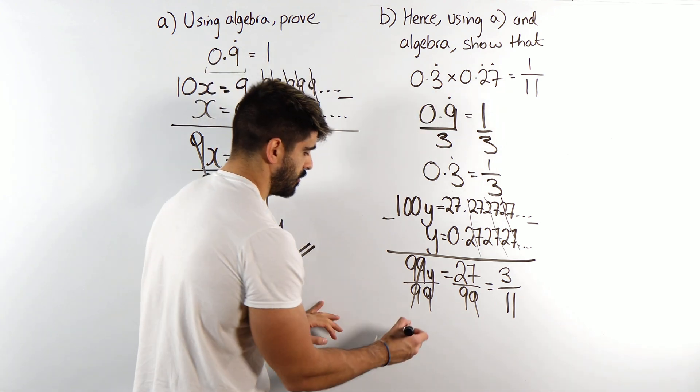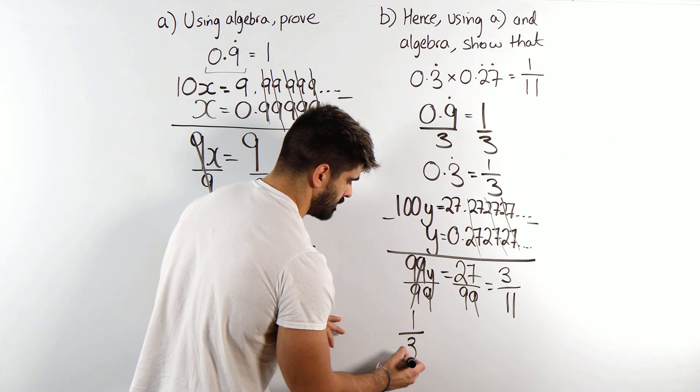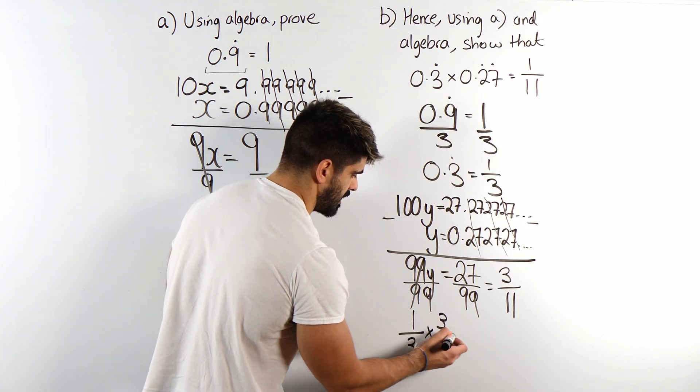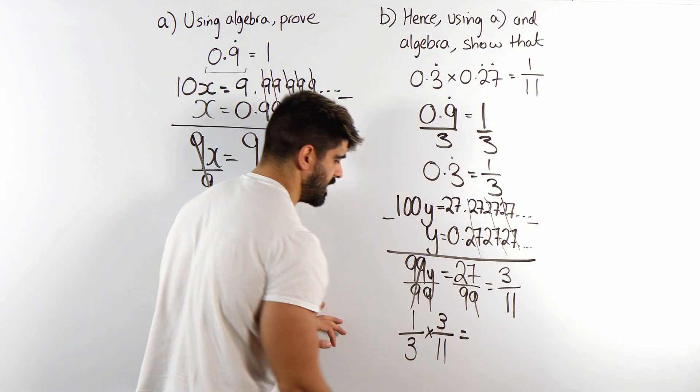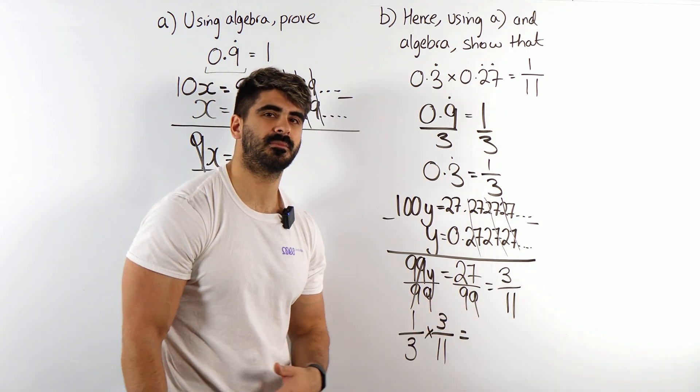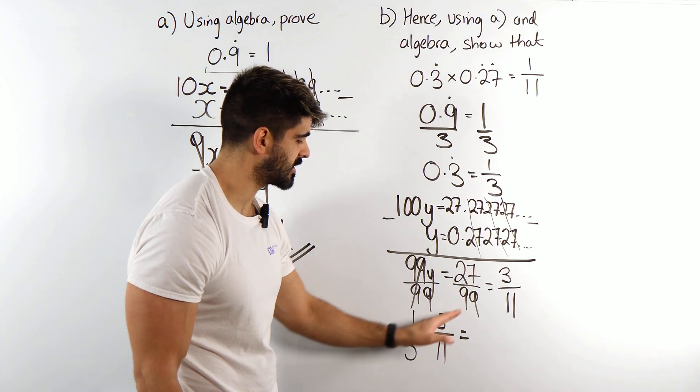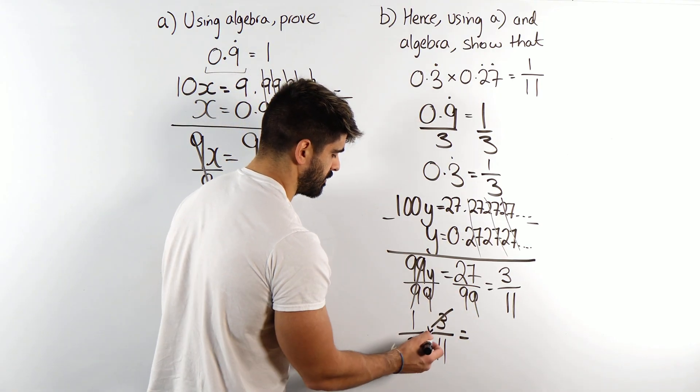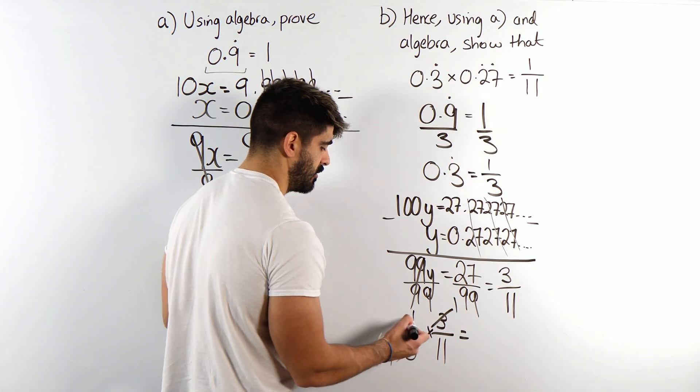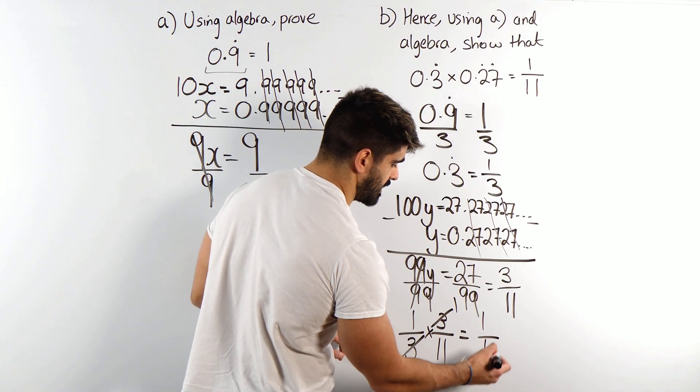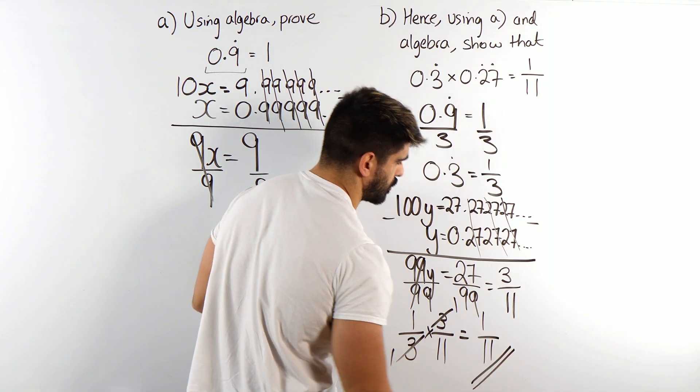So we multiply them. We're going to get 1 third times 3 over 11. And then here, you can multiply the top and the bottom to get 3 over 33. That's an amateur way of doing things. You can see the cross cancellation. The 3's cancel by dividing top and bottom by 3. We get 1 times 1 is 1 divided by 1 times 11 is 11. And that is proof.